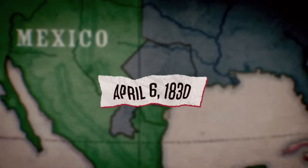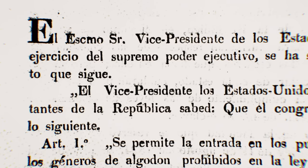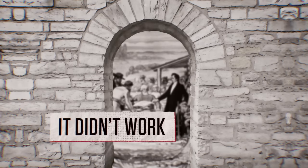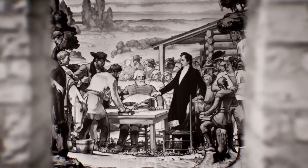So on April 6, 1830, in a bid to maintain control and keep slavery out of its country, Mexico passed a law intended to curb the flood of immigration from the United States to Tejas. It didn't work. The Americans kept coming, and the law further strained Mexico's delicate relationship with the settlers.